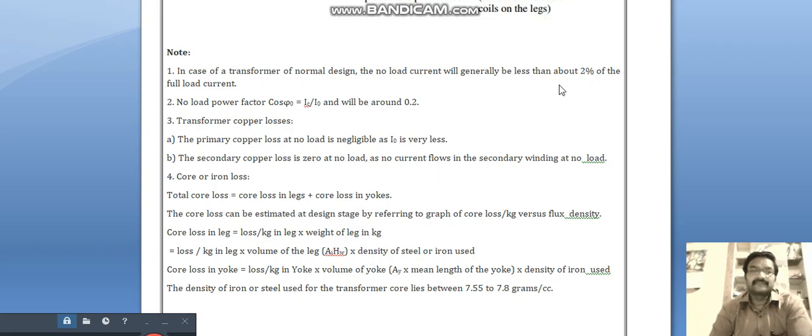The efficiency of transformer is always more than 90 percent. No-load power factor cos phi is equal to Ic by I naught and will be around 0.2.